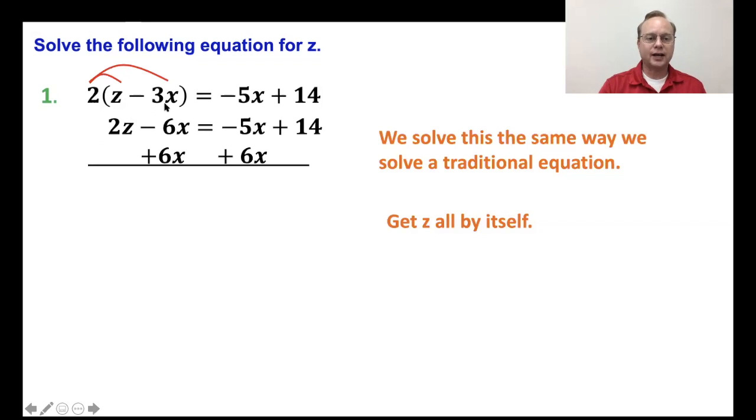That'll cancel out here on the left-hand side. Negative 6x plus 6x is going to give me zero. That's just going to leave me a 2z over here. On my right side, I've got negative 5x plus 6x, which would leave me a plain old x. So we'll do that now.